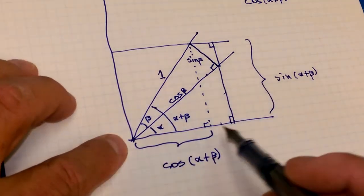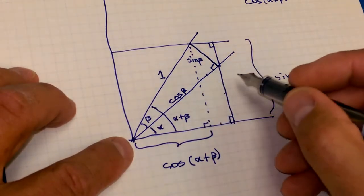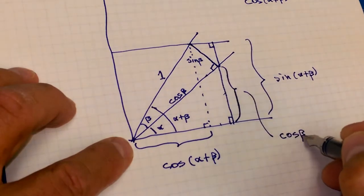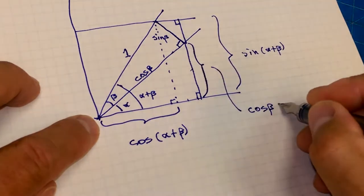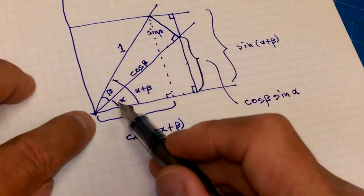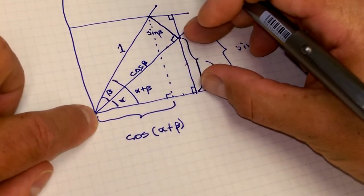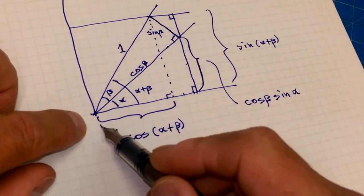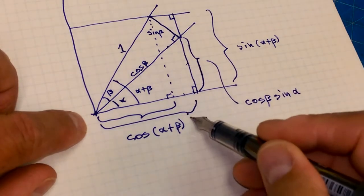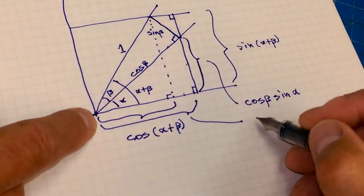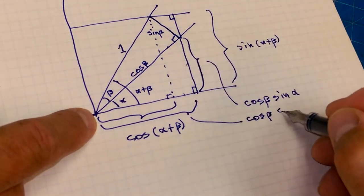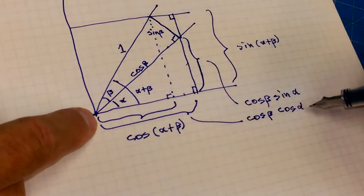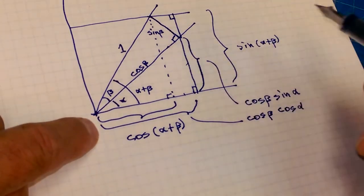So if we can figure out these individual lengths, we're in business. Let's take this big triangle down here. Since this angle is alpha and this radius is cos beta, then using r sine theta and r cos theta: r is cos of beta, so this side is cos beta times sine alpha, and this whole distance here is cos beta times cos alpha.